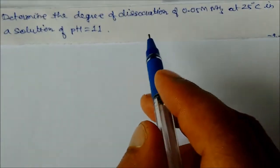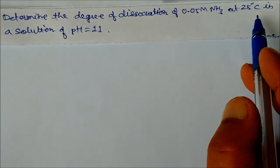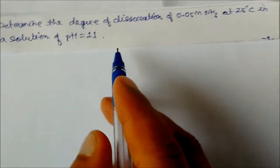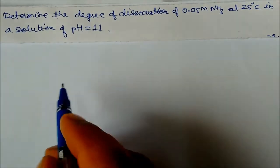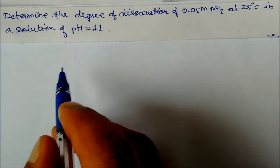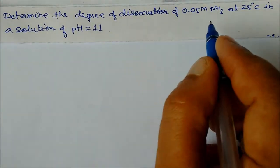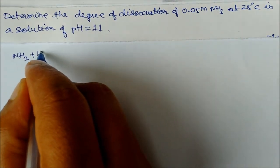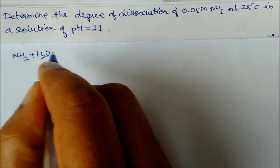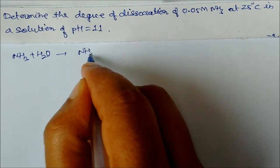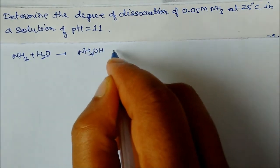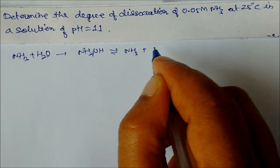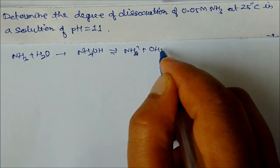Determine the degree of dissociation of 0.05 M ammonia at 25°C in a solution of pH = 11. We write the equilibrium: NH₃ + H₂O → NH₄⁺ + OH⁻. Initial concentration of NH₃ is C = 0.05 M and zero for the ions. At equilibrium: [NH₄⁺] = C·α, [OH⁻] = C·α, [NH₃] = C(1−α).